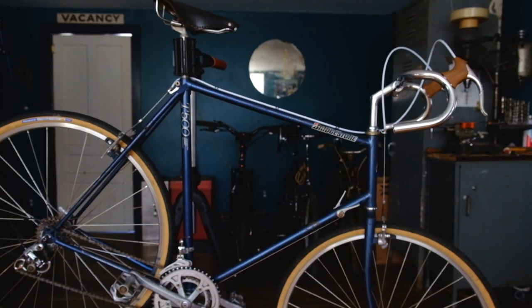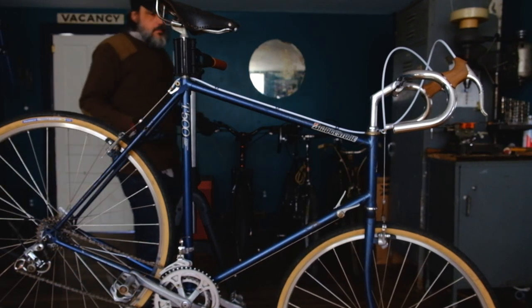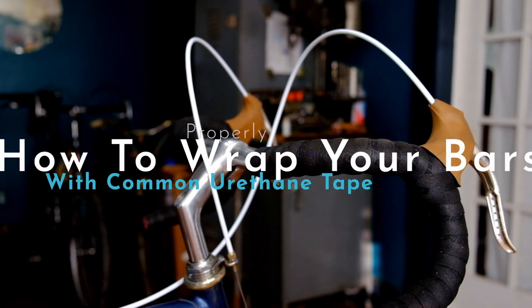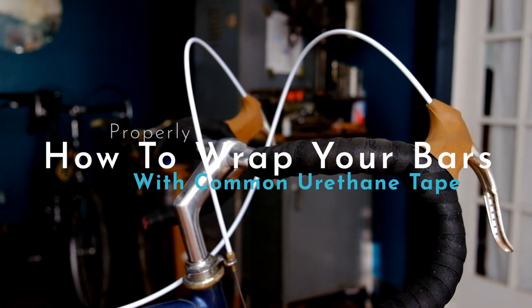The following is the best method for wrapping a basic drop handlebar with poly gel tape. This is the most basic setup, brake levers only, external cables.